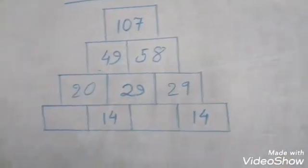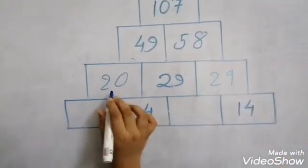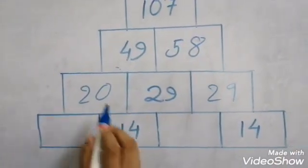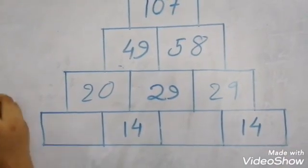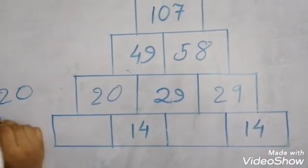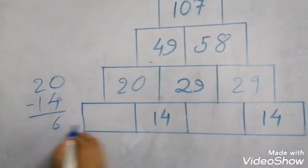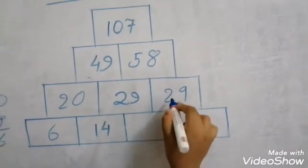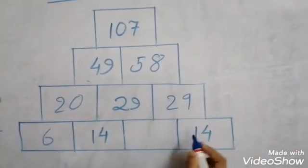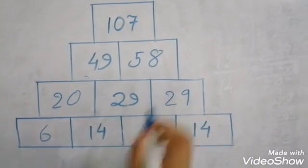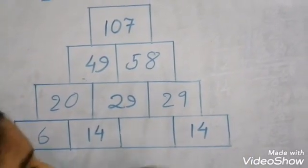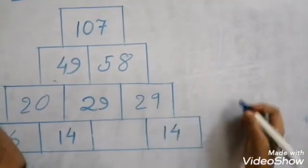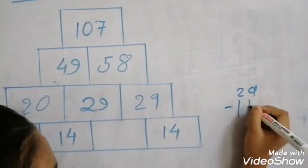Next here also here. So to get the number here we should subtract 14 from 20. So 20 minus 14 is equal to 6. So we will write here 6. And to get the number here we will subtract 14 from 29. 29 minus 14.